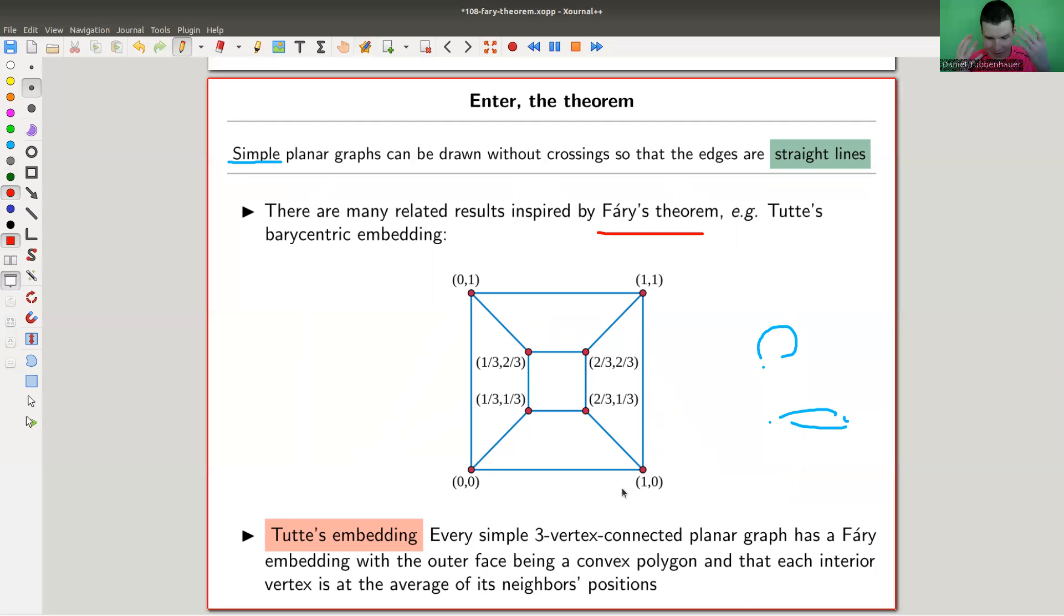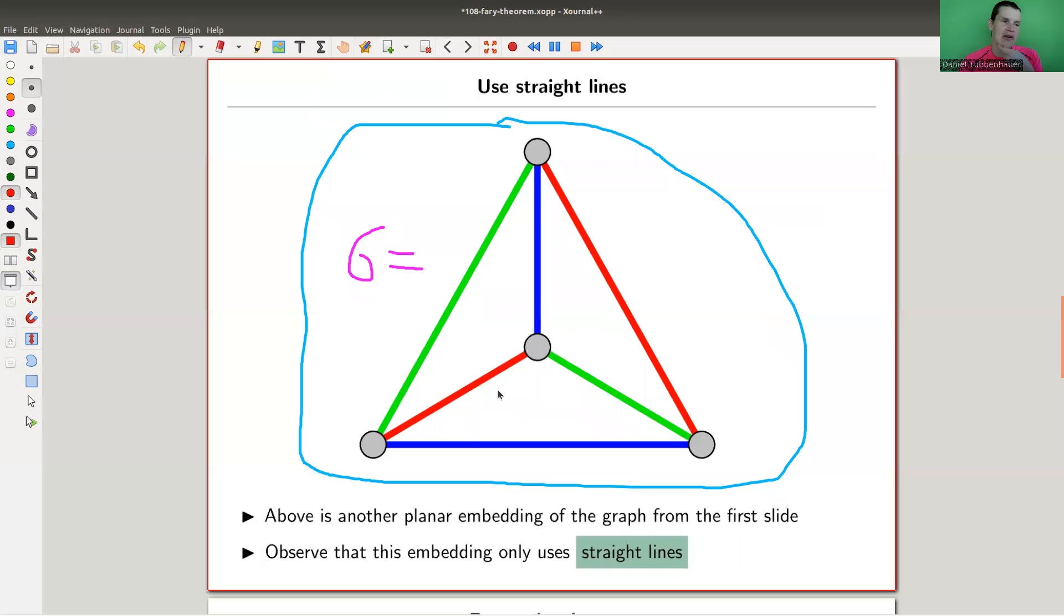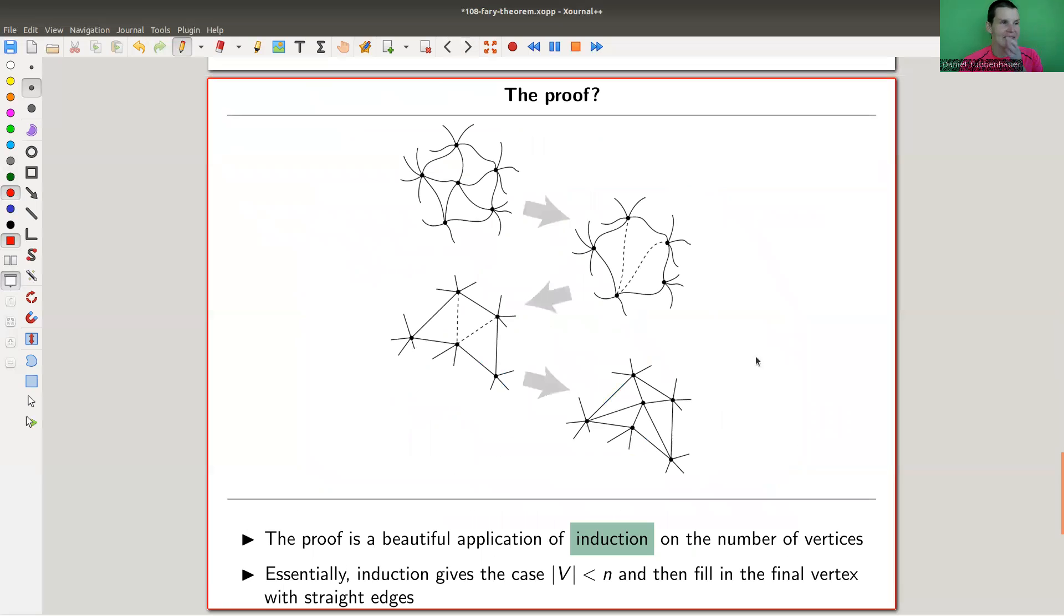So as soon as you see the proof, it's kind of clear that this has to work. And it's really related to just how you would to do it for this graph, actually, that you just kind of remove this vertex in the middle, you have the obvious triangle on the outside, you put it in, and so kind of induction argument, you put it in again, and you connect via straight vertices, straight lines. And that's exactly the proof. So it's a really beautiful proof, and a beautiful application of induction.